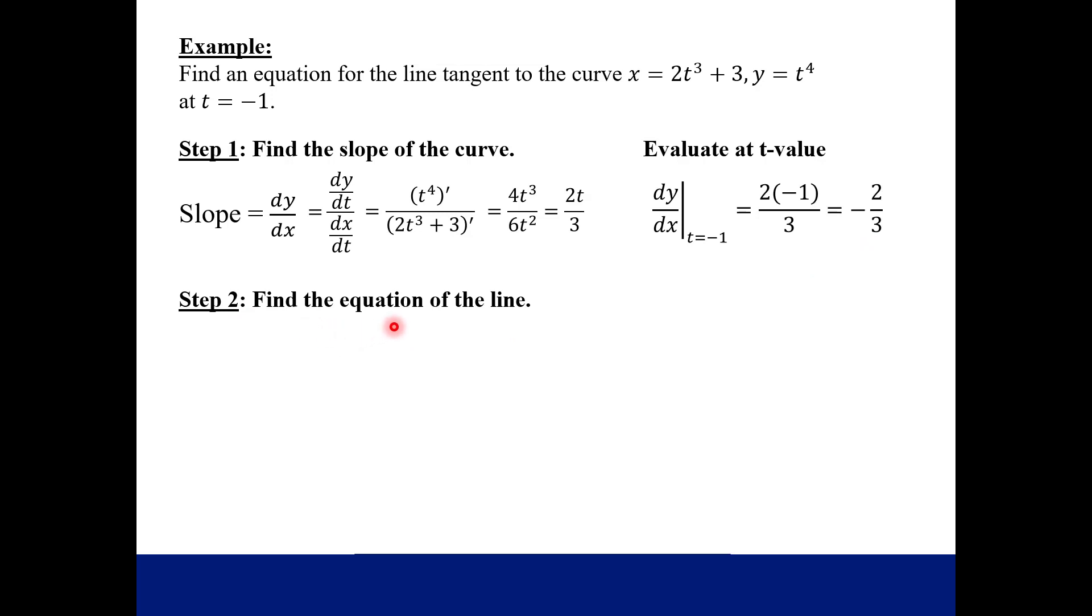So now we find the equation of the tangent line. And for a tangent line, the slope of a tangent line is the slope of the curve at that point. So let me remind you, your equation of a line. So this is your point slope form of a line. And in our case, we found the slope. It was negative 2 thirds. So we just plug that right here in for m.